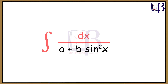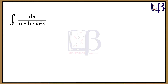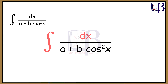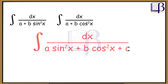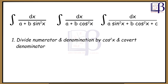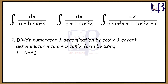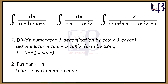Integration of dx upon (a + b sin²x), or integration of dx upon (a + b cos²x), or integration of dx upon (a sin²x + b cos²x + c). Divide numerator and denominator by cos²x, and convert the denominator into the form (a + b tan²x) using the identity 1 + tan²θ = sec²θ. Then put tan x = t and take the derivative on both sides with respect to x.